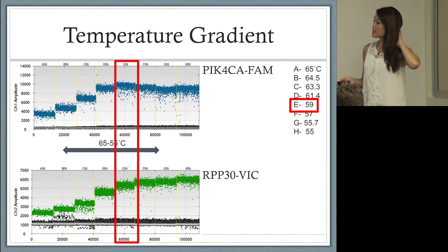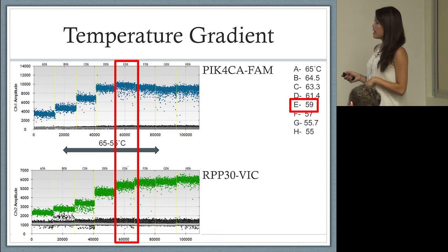For assay design, it was very similar to standard PCR. Here I just have one of my target assays and the control RPP30. Here we're just trying to determine the proper annealing temperature. You can see it's really easy to find the best temperature.